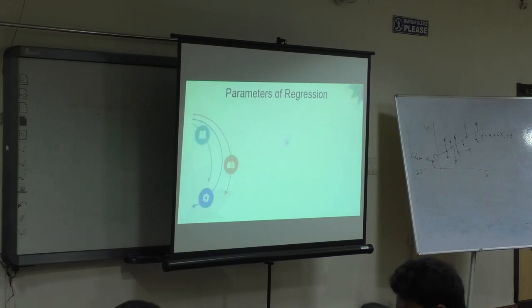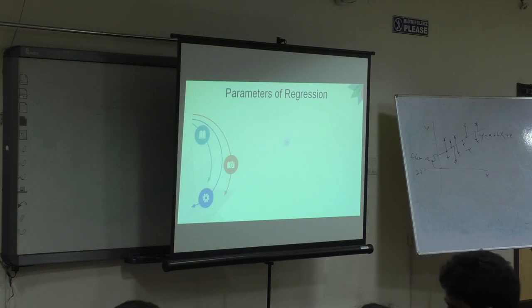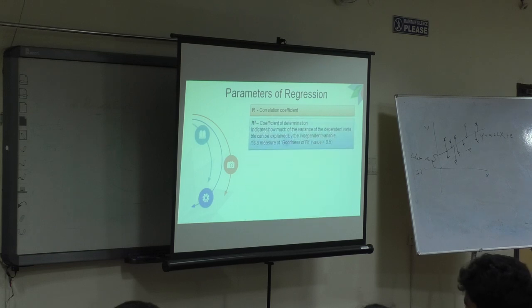Parameters of regression. R correlation coefficient, this we already know. R square coefficient of determination I just now mentioned to you. That is called the least square. Least square method we use based on R square. So just go through it.